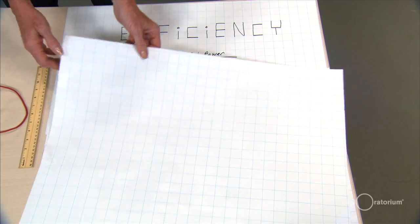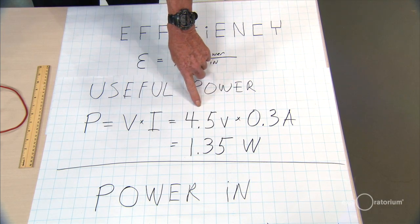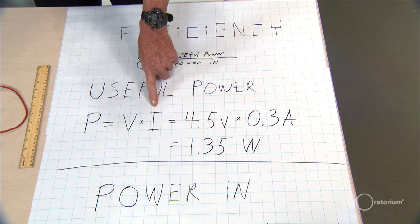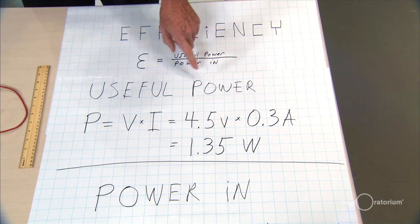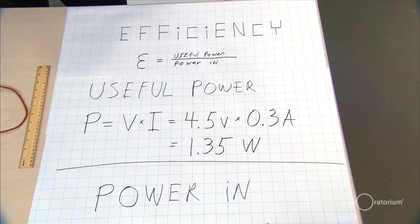When we put in our measurements from the sun, we find out the voltage was 4.5 volts from the sun, the current was 3 tenths of an amp. That gives us a power of 1.35 watts.